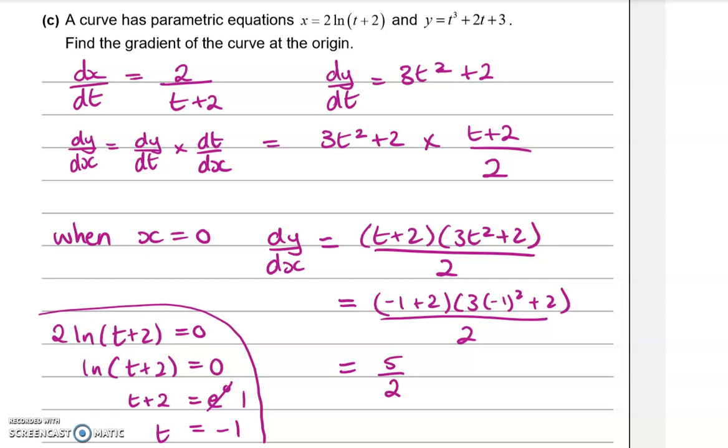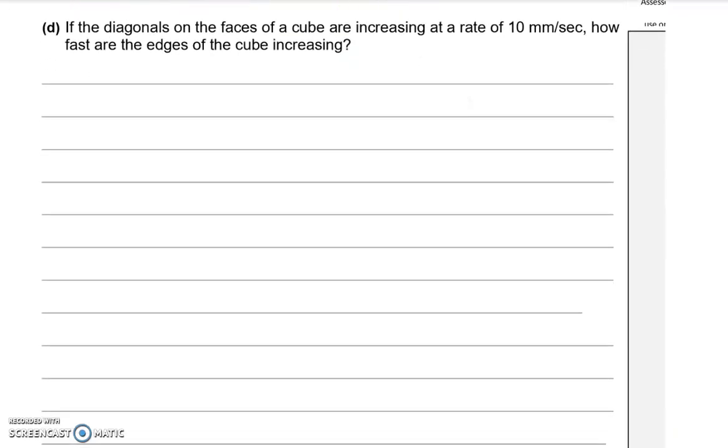Now on this question, if you got as far as knowing what dy/dx was, that was worth a U mark for achieved. And if you went through putting in the right value of T and got the right answer at the end, that gives you the R mark for the merit.